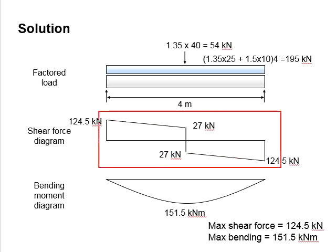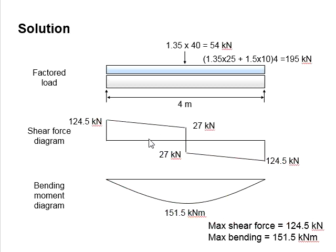From the shear force diagram and bending moment diagram, the maximum shear load is identified to be 124.5 kN and the maximum moment will be 151.5 kNm. This number will be adopted in the design of the reinforced concrete element at the later stage of the analysis.